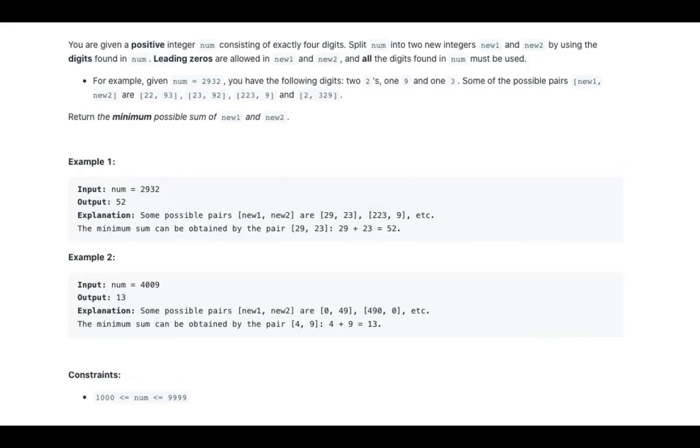For example, given num is 2932, you have the following digits: two 2s, one 9, and one 3.